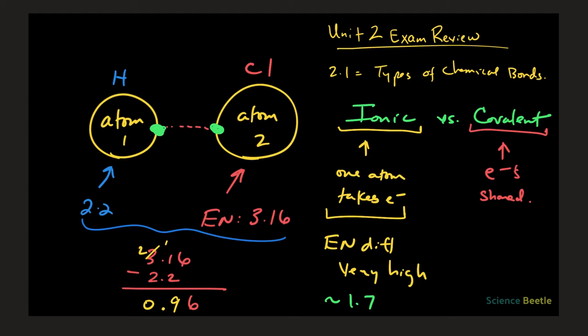Although the electronegativity difference is 0.96, the electrons are not going to be fully taken by one atom — they're still shared. However, the electron will be a little bit closer to the chlorine atom. So what we start to see here is hydrogen will have a delta positive charge and chlorine will have a delta negative. This is the beginning of polarity, even though this is still a covalent bond between hydrogen and chlorine.